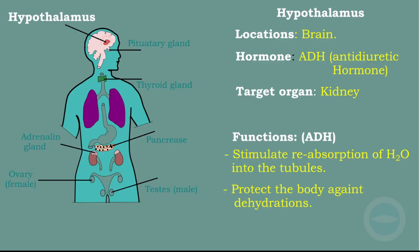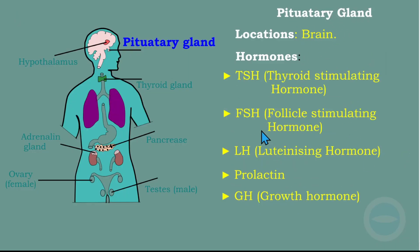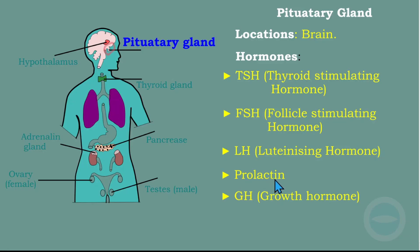Next is the pituitary gland. The location of the pituitary gland is at the base of the brain. It secretes many hormones: TSH (thyroid stimulating hormone), FSH (follicle stimulating hormone), LH (luteinizing hormone), prolactin — which is related to breastfeeding and milk — and growth hormone, which is for growth.